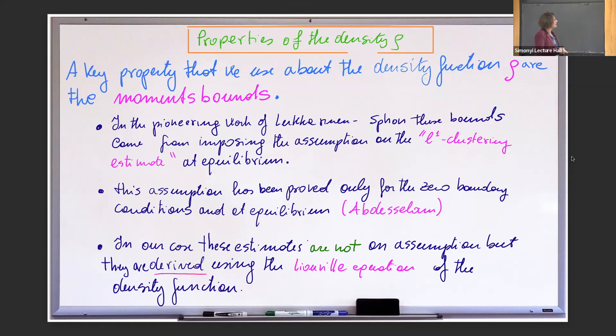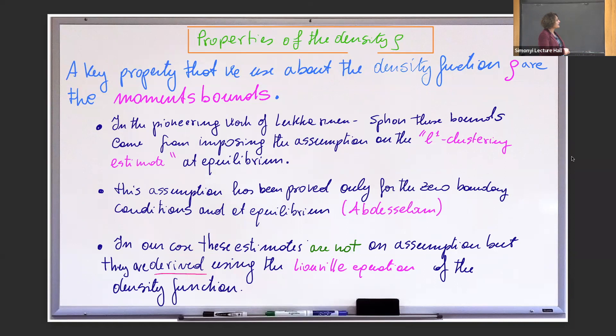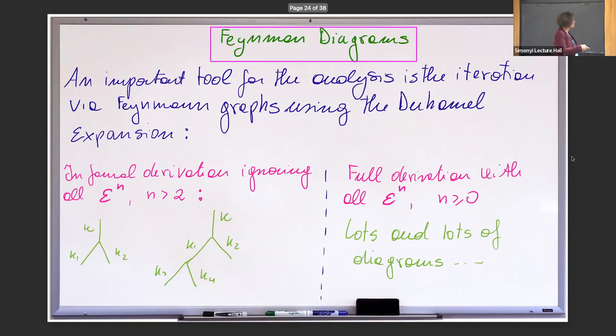By using the equation for the density function rho, we get some good a priori bounds in time. I want to mention that in the work of Lukkarinen-Spohn, this was not the approach — they didn't use the function rho. They had to assume a priori bounds, which they called L1 clustering estimates — assumptions that were not coming from the equation itself. In fact, those assumptions were later proved, but only in very specific situations. In our case, instead, since we work with rho, these estimates are not assumptions but are actually derived from the Liouville equation itself.